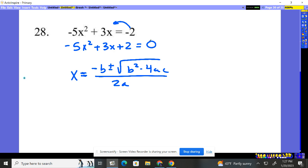The a value is simply who's in front of x squared, the b is who's in front of the x, and the c value is your constant value right there. So a is negative 5, b we're going to write as 3, c will be 2.